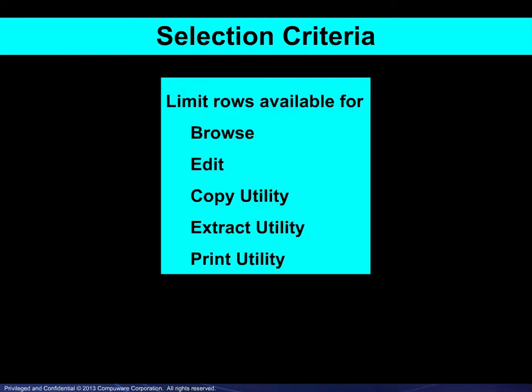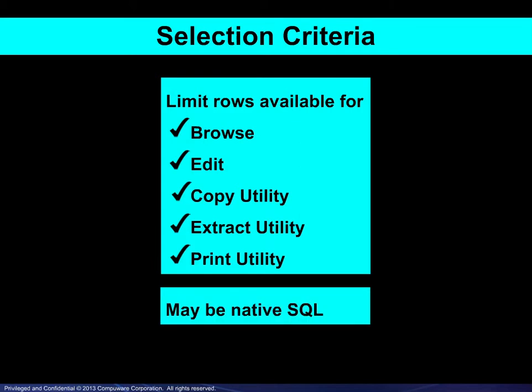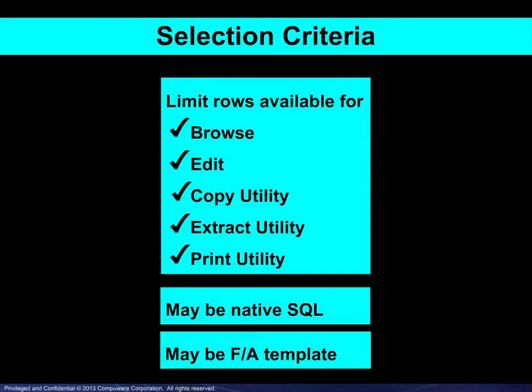Selection criteria may be used to limit the rows available for not only browse and edit, but also for the copy utility, the extract utility, and the print utility. Criteria may be specified as native SQL or by using a template provided by FileAid. The examples you will see will be used for editing, but the specification techniques are the same for all of the functions mentioned.